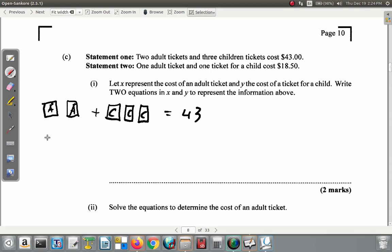The cost of all of them is $43. Then, one adult ticket, so you have an A. And one ticket for a child. It costs $18.50. Now, here.